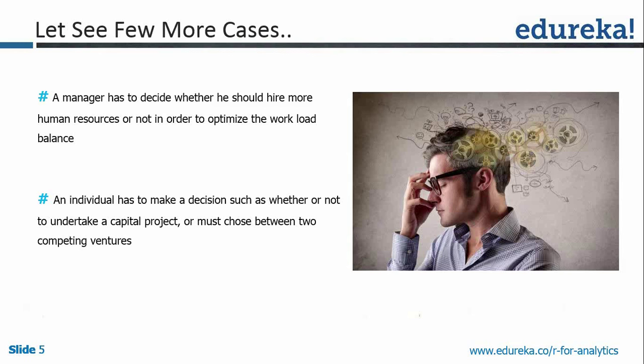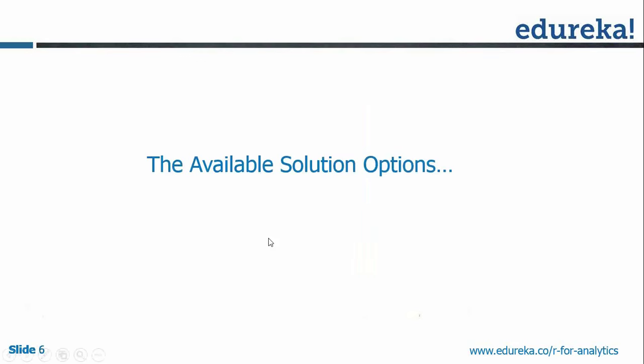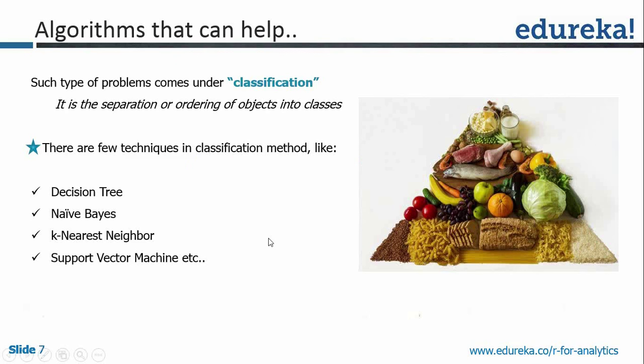You'll have to be very data-oriented to make such a decision. An individual has to make a decision such as whether or not to undertake a capital project, or must choose between two competing ventures. That's another example. So what are the solutions available? This is basically a classification problem.